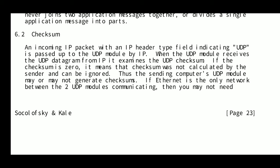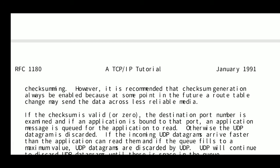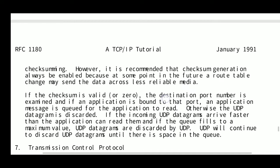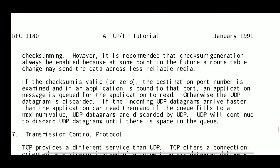The sending computer's UDP module may or may not generate checksums. If Ethernet is the only network between the two communicating UDP modules, checksumming may not be strictly needed. However, it is recommended that checksum generation always be enabled, because a future route table change may send the data across less reliable media. If the checksum is valid or zero, the destination port number is examined.